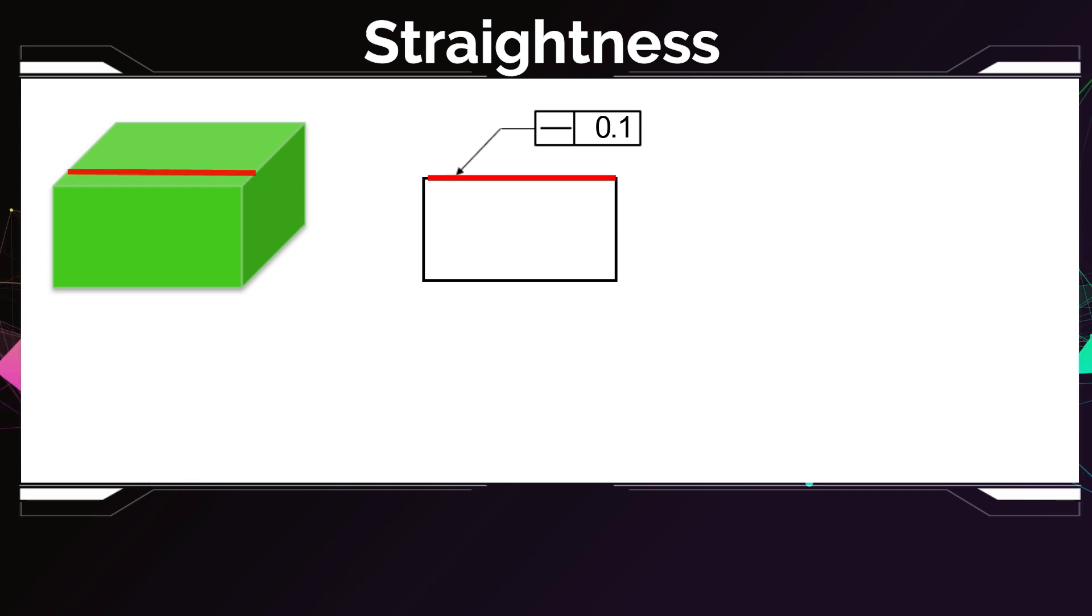And not only one line, but any line on that surface that's parallel to the line that's pointed at by the leader has to fulfill this tolerance requirement. So any line of those or any line between them has to fulfill this tolerance.